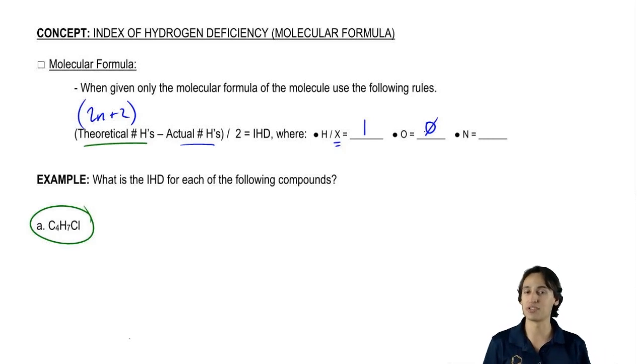Then how about nitrogen? Nitrogen is a special case. Nitrogen is actually going to count as negative 1 hydrogen for your overall compound. So that means that I'm not just counting H's, I'm also counting all halogens and all nitrogens and I'm ignoring the oxygens.